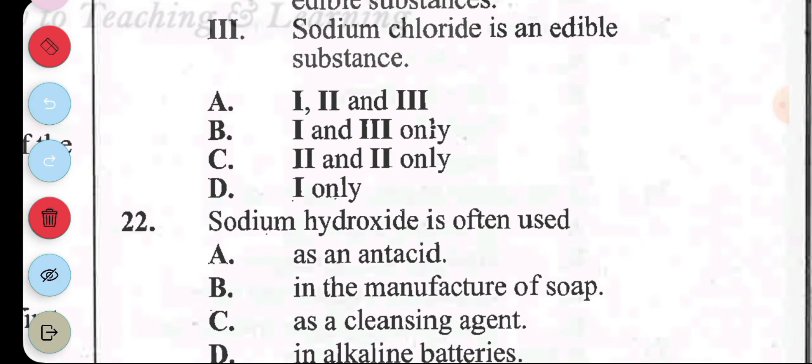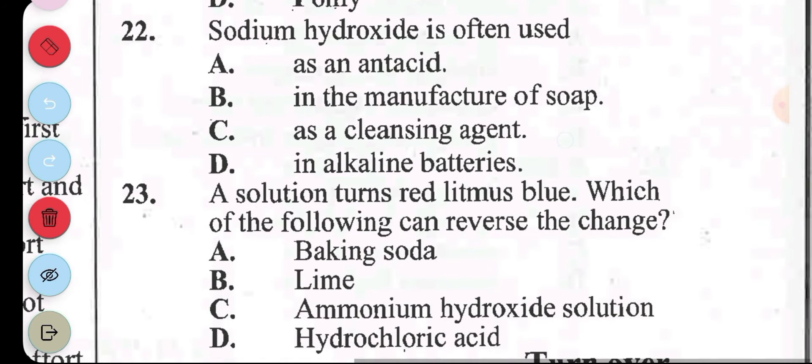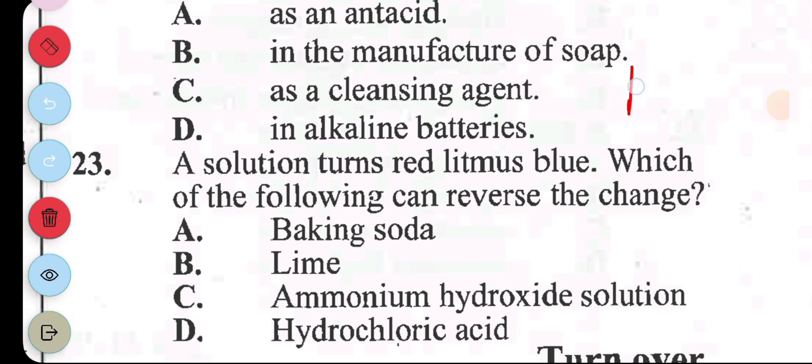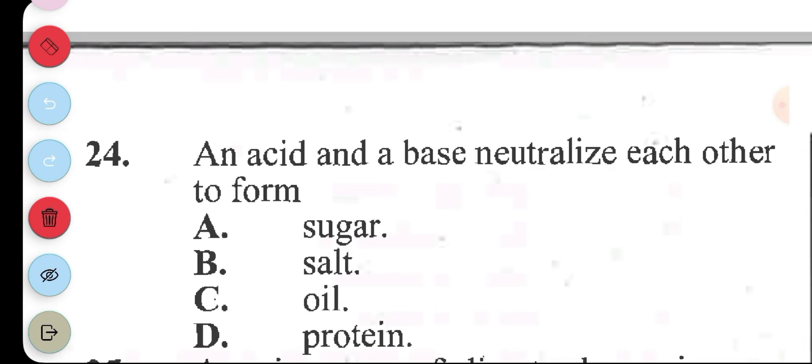Question 22: sodium hydroxide is often used A, as antacid. B, in the manufacture of soap. C, as a cleansing agent. D, in alkaline batteries. The answer to question 22 is B, used to manufacture soap. Question 23: a solution turns red litmus blue. Each of the following can reverse the change. Let's analyze the question. There's only a base that will turn red litmus blue. So if a base turns red litmus blue, how do we reverse? We can only reverse when we use an acid. The answer to question 23 is D. Question 24: an acid and a base neutralize each other to form salt. That was B.